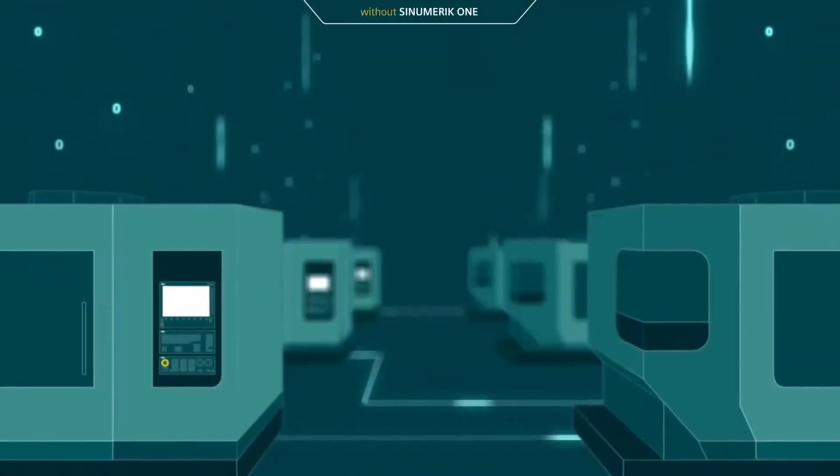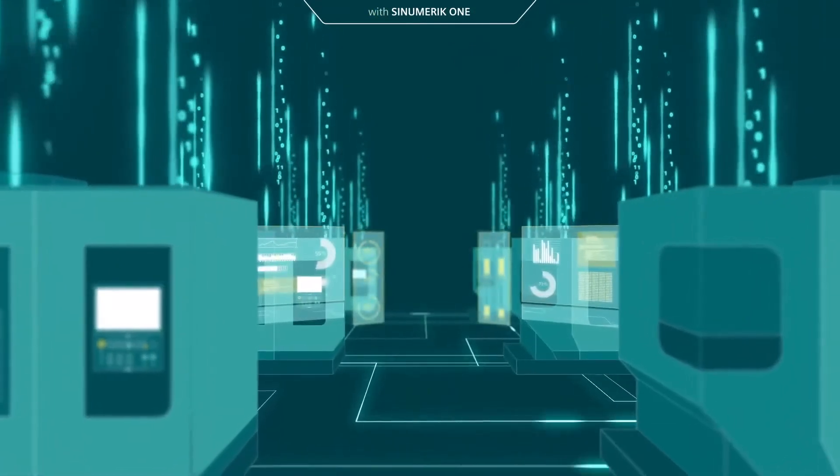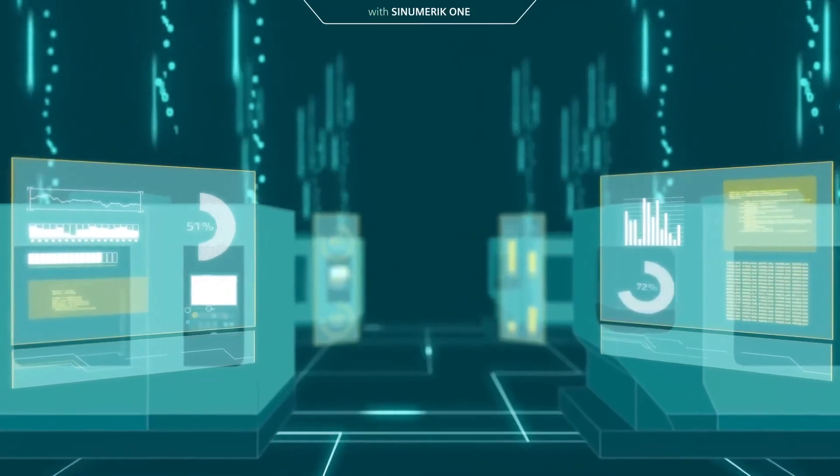The key thing that you get with the Cinemaric One platform is access to the digitalization tools. So that includes the digital twin. That includes MindSphere and being able to access and manage the machines remotely. These are things that are definitely going to give you increased productivity.